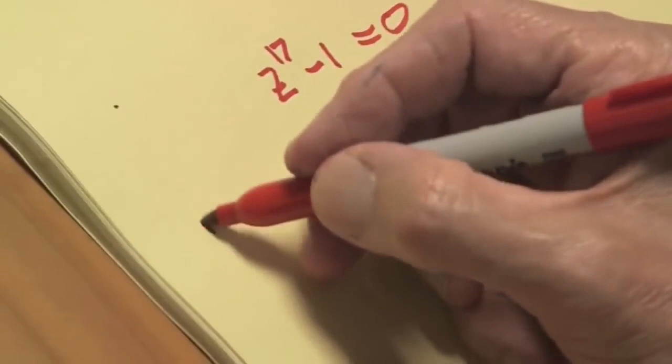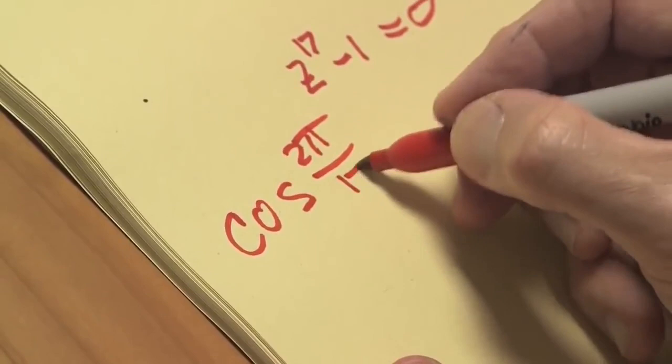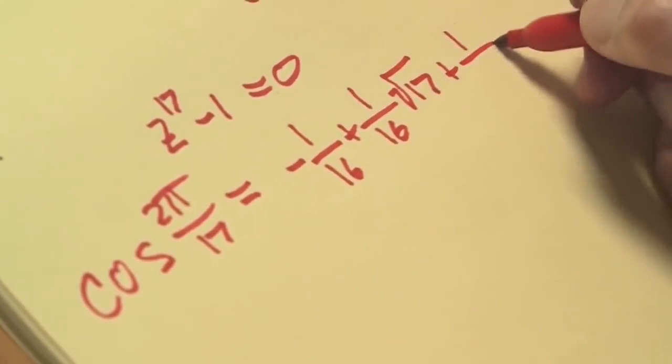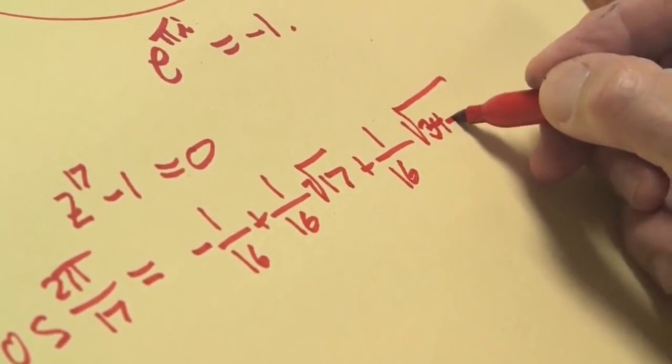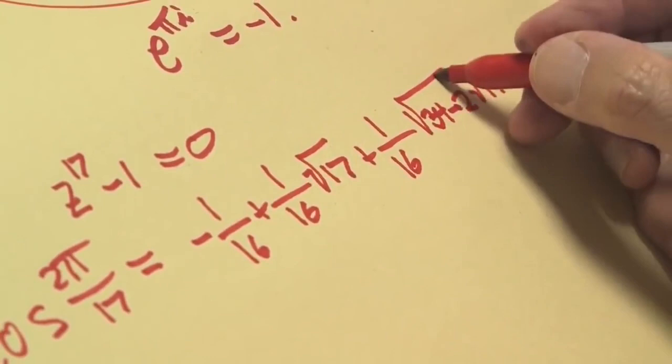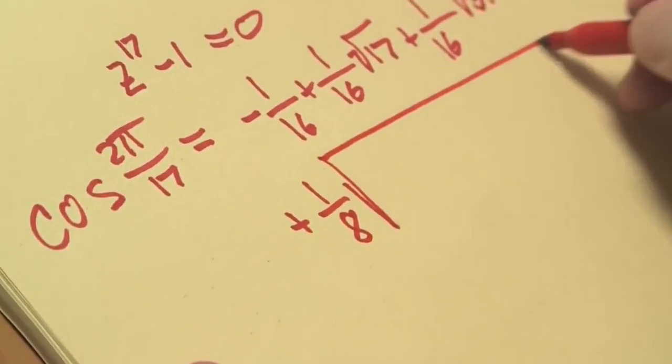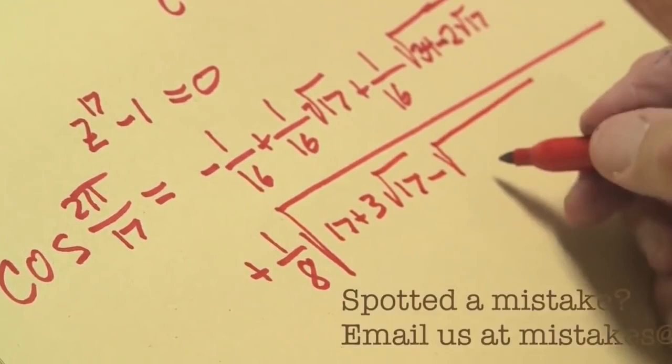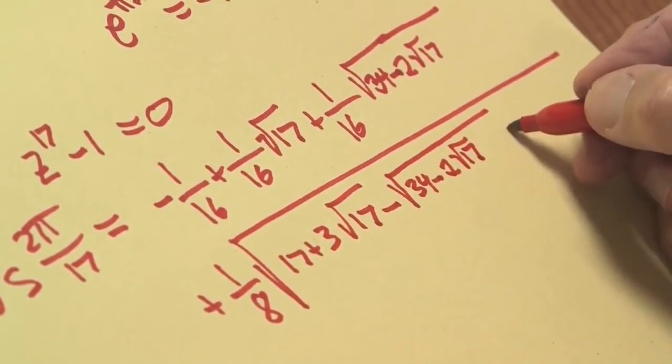So he showed, this is going to be a big formula, that the cosine of 2π over 17 was equal to minus 1/16th plus 1/16th times the square root of 17, plus 1/16th times the square root of 34, minus, inside the square root sign, 2 times the square root of 17. You're allowed to take iterated square roots in this, plus 1/8th times a big square root of 17, plus 3 times the square root of 17, minus the square root of 34, minus 2 times the square root of 17. And then minus another 2 times the square root of 34, plus 2 times the square root of 17. Do you know what, Professor? I think it would have been easier for him to get the compass and the ruler in.